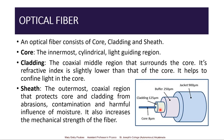The sheath is the outermost coaxial region that protects the core and cladding from abrasions, contamination, and harmful influences of moisture. The buffer and jacket together comprise the sheath. This also increases the mechanical strength of the fiber, providing protection since the core and cladding are made of glass.